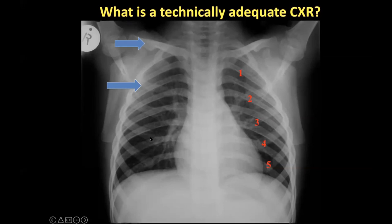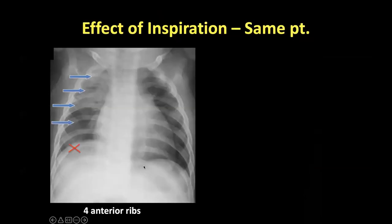In pediatrics, it's far easier to focus on the anterior ribs rather than the clavicles for rotation, as in adults. In a normal chest X-ray, we would like to see five to six full anterior ribs. So if this is your fifth anterior rib, you're seeing the whole thing. We usually use the right side. On this example, we have only got four anterior ribs — one, two, three, four — and we can't see the whole of the fifth rib.